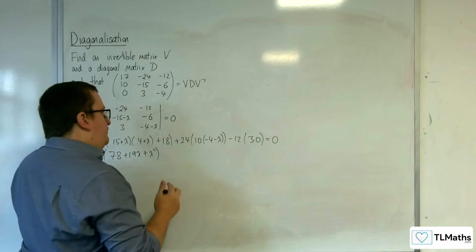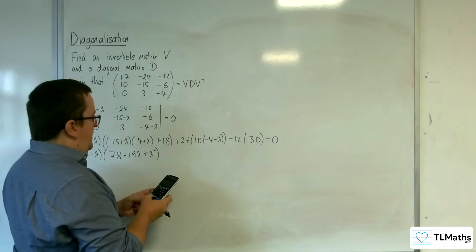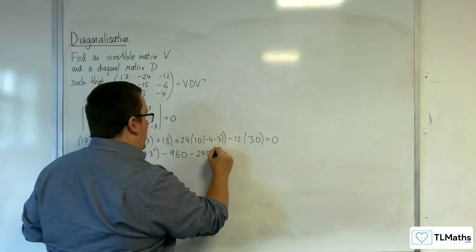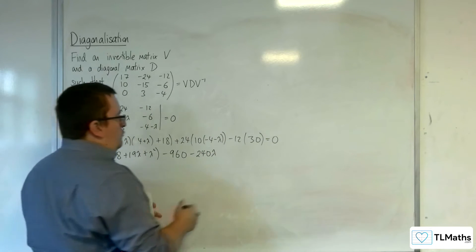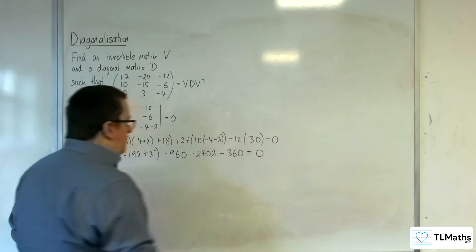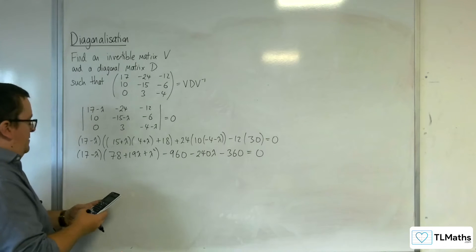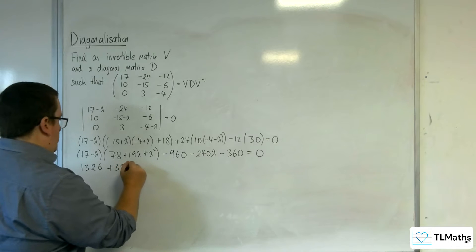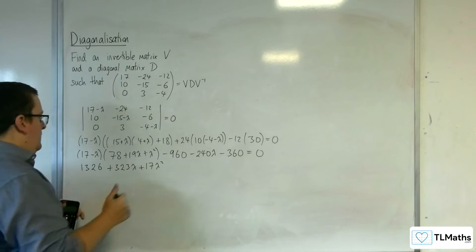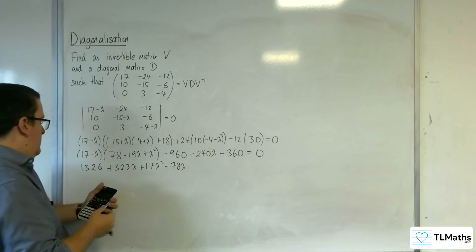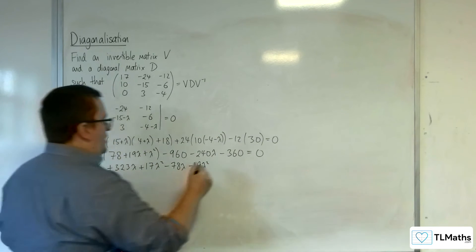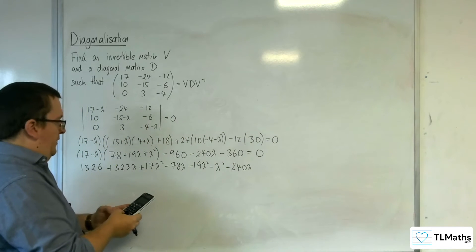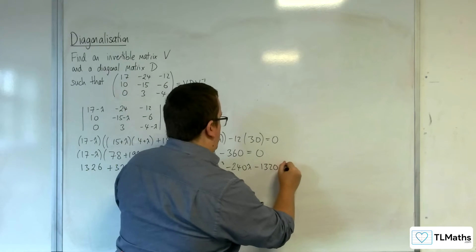Then we've got 24 times 10 times 4, so minus 960, and then take away 240 lambda. Then that's minus 360, equals 0. So 17 times 78 is 1326, then 17 times 19 is 323, so plus 323 lambda, plus 17 lambda squared. Take away 78 lambda, then take away 78 lambda squared, then take away lambda cubed. Then we've got the minus 240 lambda and minus 960, take away 360, so minus 1320 equals 0.